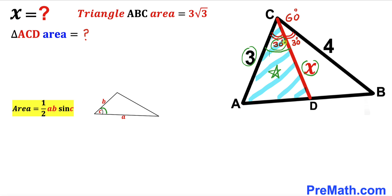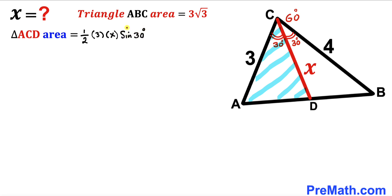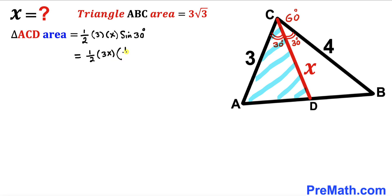So the area of triangle ACD is one half times 3 times X times sine of 30 degrees. Since sine of 30 degrees is one half, this becomes one half times 3X times one half.